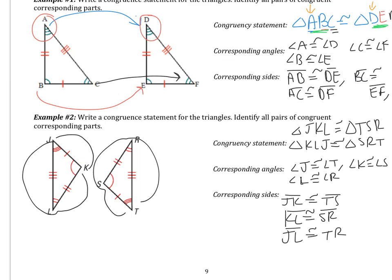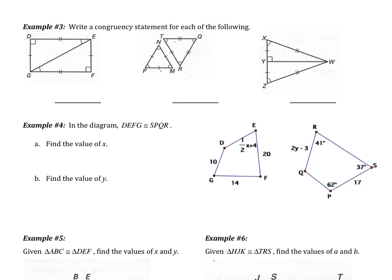We will have more time to practice in class tomorrow. Please flip the page. Example 3 continues writing congruency statements. For the first one, triangle DEG — D was my right angle, which is congruent to F (the right angle in the bottom triangle). E has one tick mark, congruent to G with one tick mark. So the statement is triangle DEG is congruent to triangle FGE.